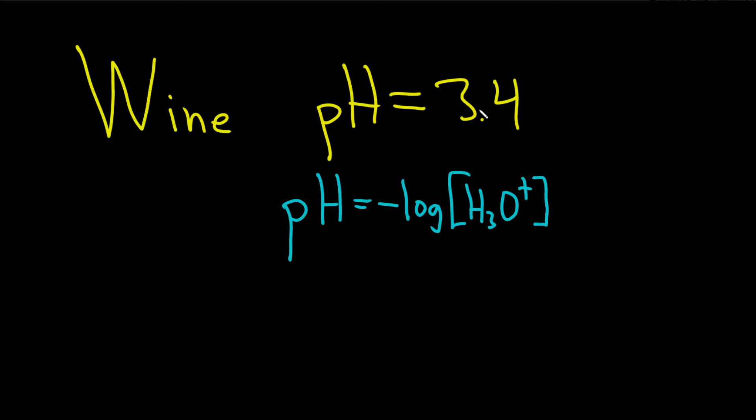So basically we just have to plug in the pH and then solve for this piece. So let's go ahead and do that. So this is 3.4. Just replace it with the number and you still have this piece here, negative log H3O plus.